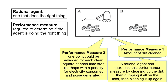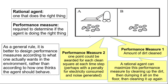So how to specify the performance measure? As a general rule, it is better to design performance measures according to what one actually wants in the environment rather than according to how one thinks the agent should behave. So in this case we want a clean environment, and that is how we should award one point for each clean square at each time step, because that is what we desire to be in the environment.